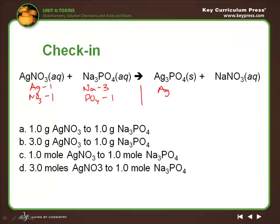On the right side we have an Ag, we've got three of them, we've got PO4, we've got one. Na there's one, and NO3 there is one.